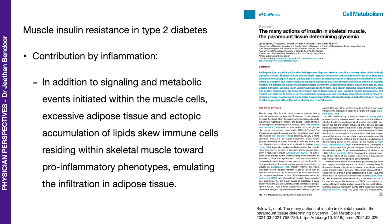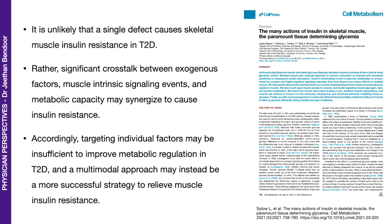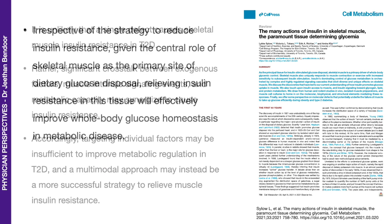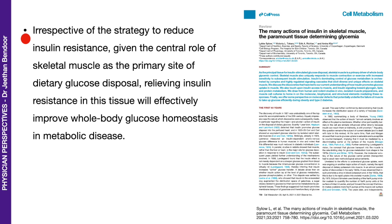To recap, the four contributors to skeletal muscle insulin resistance are: one, insulin signaling defects; two, lipid metabolites; three, oxidative stress; and four, inflammation. The authors note that it is unlikely that a single defect causes skeletal muscle insulin resistance in type 2 diabetes mellitus. Therefore, targeting individual factors may be insufficient, and a multimodal approach may be more successful. A very important take-home message: irrespective of the strategy, given the central role of skeletal muscle as the primary site of dietary glucose disposal, relieving insulin resistance in this tissue will effectively improve whole body glucose homeostasis in metabolic disease.